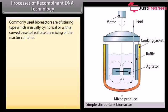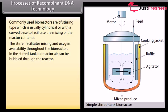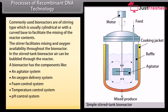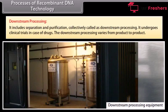Commonly used bioreactors are of the stirring type, which is usually cylindrical or with a curved base to facilitate the mixing of the reactor contents. The stirrer facilitates mixing and oxygen availability throughout the bioreactor. In the stirred tank bioreactor, air can be bubbled through the reactor. A bioreactor has components like an agitator system, an oxygen delivery system, a foam control system, a temperature control system, a pH control system, and sampling ports. The final step includes separation and purification, collectively called downstream processing. It undergoes clinical trials in the case of drugs. The downstream processing varies from product to product.